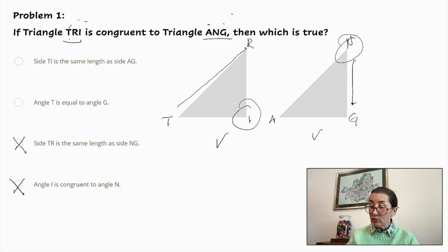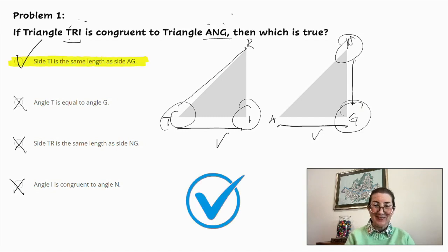Angle T is equal to angle G. Angle T is here. Angle G is here. And they're clearly not the same. We can eliminate that one as well. Now we've got side TI is the same length as side AG. This is side TI, and this is side AG. And they are identical and congruent, and that is the correct answer.